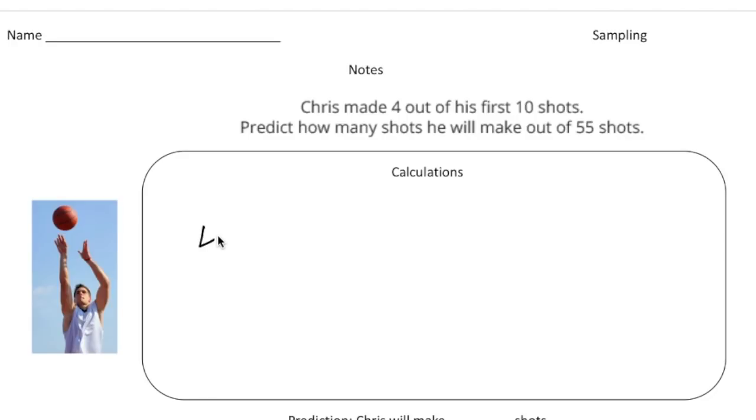So I'm going to assume that if he takes 10 more shots, he'll make four. If he takes 10 more shots, he'll make four and so on. But the question is, we want to predict how many he's going to make out of 55 shots. So I'm going to put 55 total down here. It's a proportion. And this would be x.